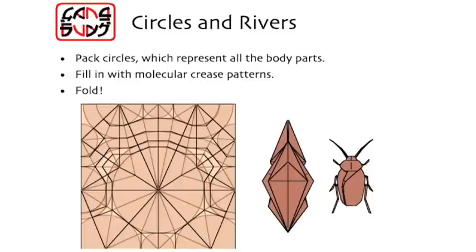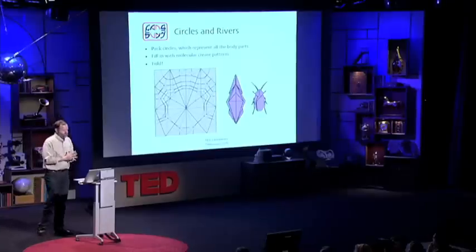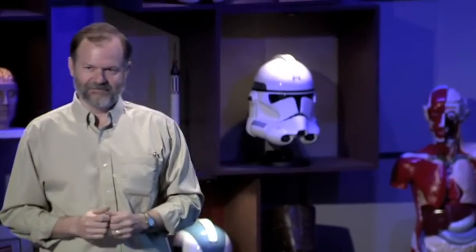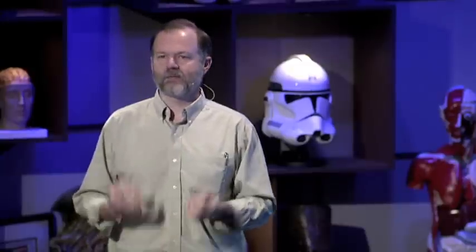So we figured out these rules, whereby you pack circles, you decorate the patterns of circles with lines according to more rules. That gives you the folds. Those folds fold into a base, you shape the base, you get a folded shape. In this case, a cockroach. And it's so simple. It's so simple that a computer could do it. And you say, well, how simple is that? But computers, you need to be able to describe things in very basic terms. And with this, we could.